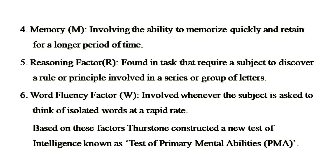Factor four is the memory factor: it involves the ability to memorize quickly and retain information for a longer period of time. Factor five is the reasoning factor: found in tasks that require a subject to discover a rule or principle involved in a series or group of letters. Factor six is the word fluency factor: it involves situations where the subject is asked to think of isolated words at a rapid rate. Based on these factors, Thurston constructed a new test of intelligence known as the Test of Primary Mental Abilities (PMA).